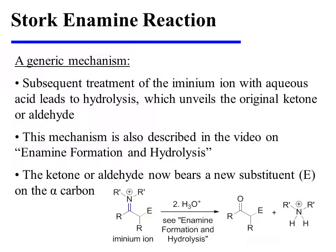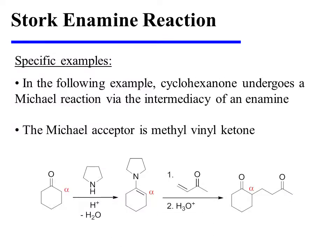The ketone or aldehyde now bears a new substituent on its alpha carbon. In the following specific example, cyclohexanone is first converted to a corresponding enamine through condensation with a secondary amine. This enamine then undergoes a Michael reaction. Here, the Michael acceptor is methyl vinyl ketone.